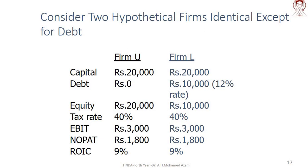You can see there are two firms — one firm is called U, the other firm is L. U means unleveraged, L means leveraged. Consider two hypothetical firms that are identical except for debt. The total capital is 20,000.